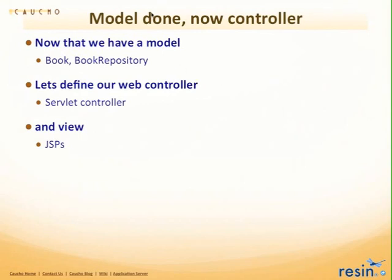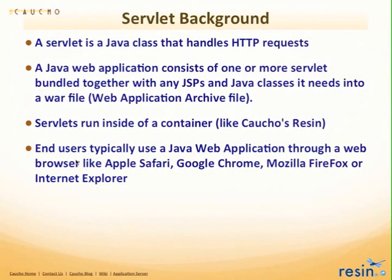We've separated the code such that we have a model — a Book and a BookRepository — that's our model. We define our web controller, doing MVC-style development: the servlet is the controller and the JSP is the view. A servlet is a Java class that handles HTTP requests. A Java web application consists of one or more servlets plus JSPs and Java classes, all bundled up into a WAR file. A WAR file is basically a ZIP file.